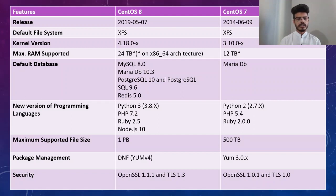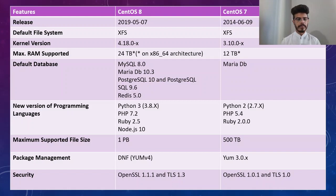The default databases have also increased in CentOS 8. They now include MySQL 8, MariaDB, PostgreSQL 10, SQL 9.6, and Redis 5.0. Previously, the default database in CentOS 7 was MariaDB only.